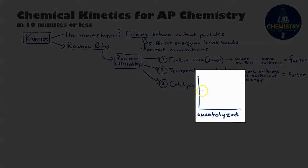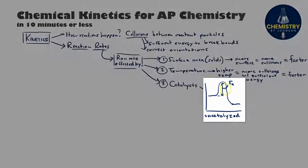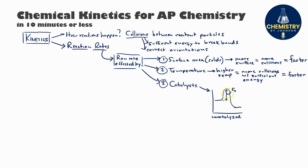In an uncatalyzed reaction, we have one line representing the reactants' approximate energy and another representing the energy of the products. In order for reactants to turn into products, there's an energy barrier that has to be overcome. The height of that peak represents the activation energy, symbolized as Eₐ. In the uncatalyzed reaction, that activation energy peak is pretty high, meaning lots of energy is required when reactant molecules collide in order for the reaction to occur.